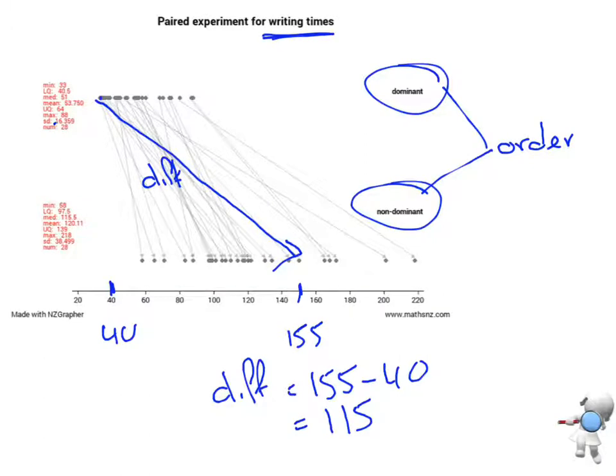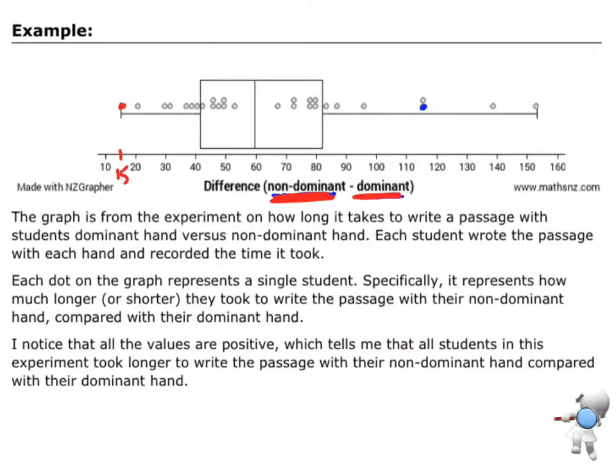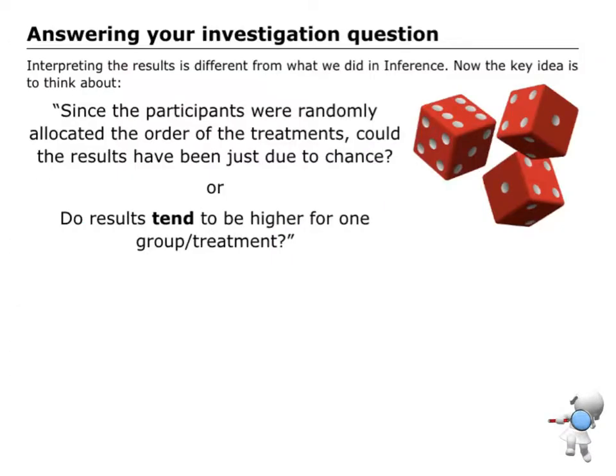So, one of the things that I noticed with this graph here, all of the arrows, when we look at all these lines, all of these lines are going in this positive direction. There aren't any lines going back this way. And so, that tells me that everybody took longer to write with their non-dominant hand than with their dominant hand. Equally, on the dot plot, we can see that all the values are positive. So, because all of the values are positive, that tells me that everybody took longer to write with their non-dominant hand than their dominant hand. That would be the analysis that we're looking for. And we can talk about shape, center, spread a little bit as well if we needed to.